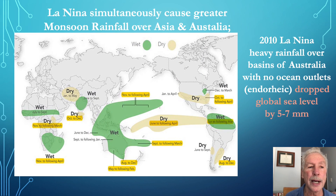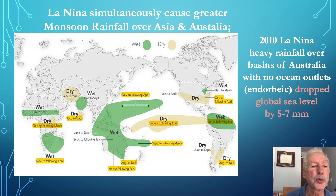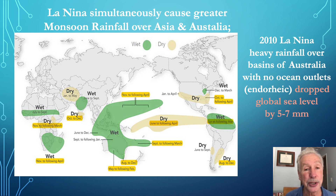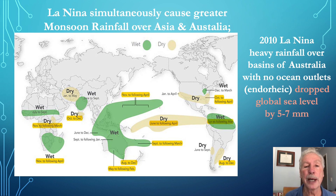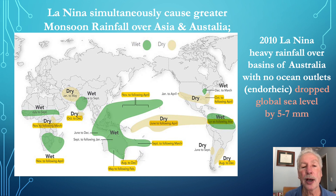In contrast, the La Niña condition simultaneously causes greater monsoon rainfall near Asia and Australia. As an example, during the 2010 La Niña, heavy rainfall over the endorheic basins of Australia — basins with no ocean outlets — caused enough water to accumulate that the global sea level dropped by five to seven millimeters.